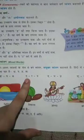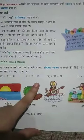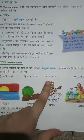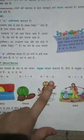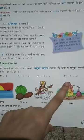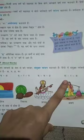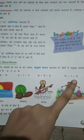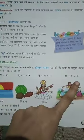Ta plus Ra milkar bante hai Tra. Ja plus ua is equal to Gya. Shah, halant lagaya hai, plus Ra is equal to Shra.